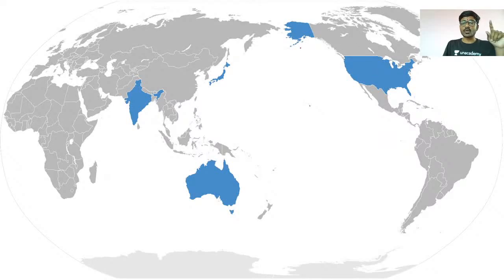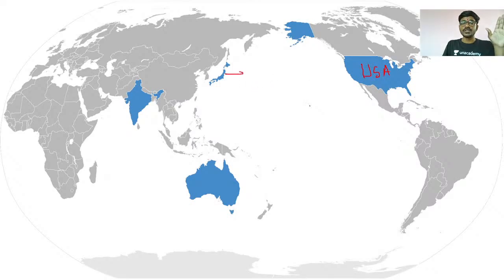This is the Quad Group. USA is part of the Quad Group. Can anybody tell me what is the main objective of the Quad Group? Japan is part of the Quad Group. Then Australia is part of the Quad Group and India is part of the Quad Group.